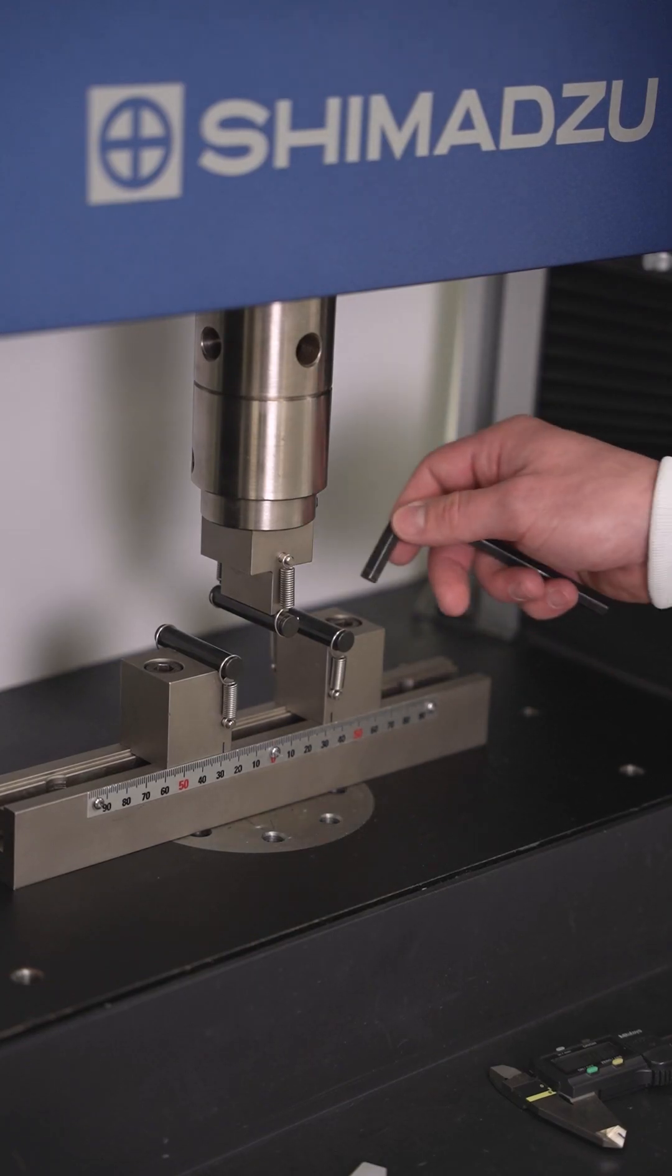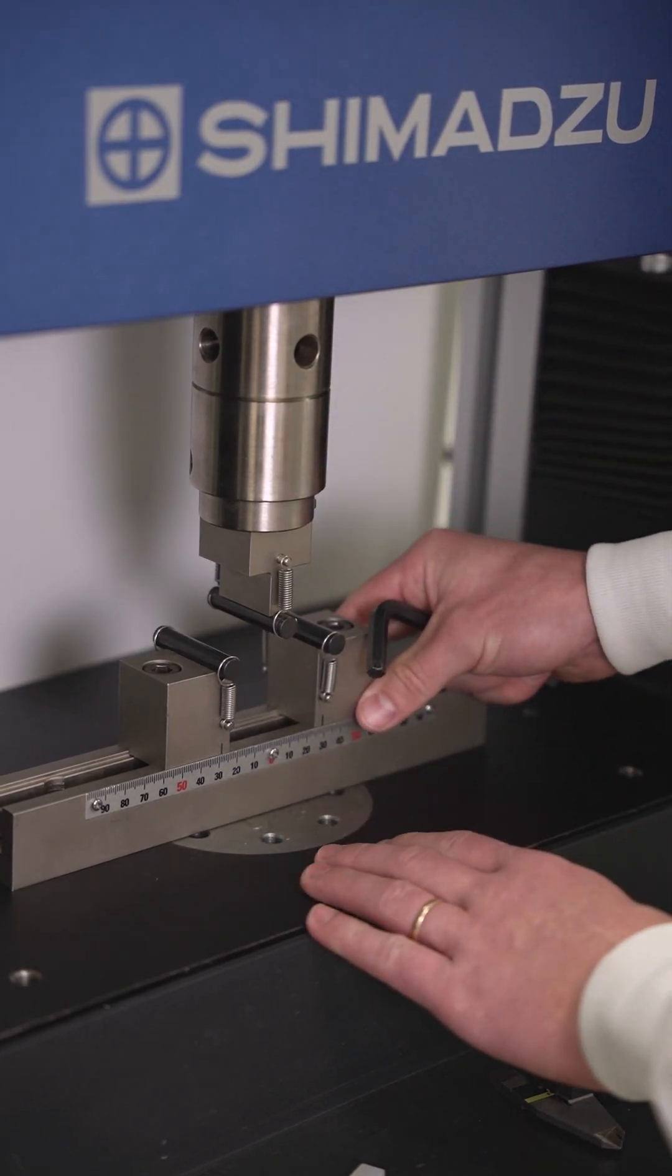A displacement gauge such as a deflectometer or linear gauge should be used for accurate strain measurement but is not required.